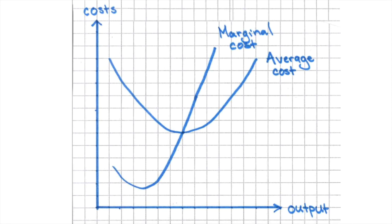The typical diagram you'll see of marginal cost and average cost is shown here. The marginal cost curve will always cut the average cost curve at its lowest point. This is because below this point, marginal costs are below the average and therefore bring it down. However, as marginal costs start to rise, the rate at which average cost falls starts to slow down and it approaches its lowest value. They are equal at the point at which they intersect. Beyond this, marginal cost is rising, so it pulls up the average cost of production, which explains the shape of the average cost curve.